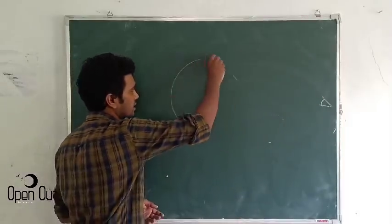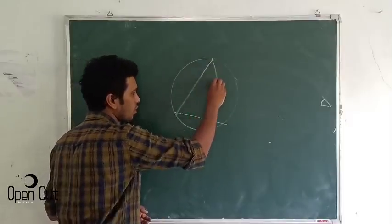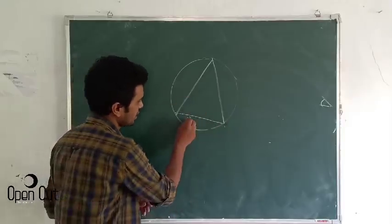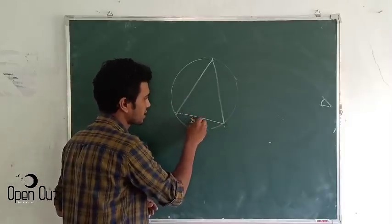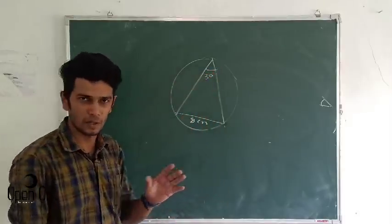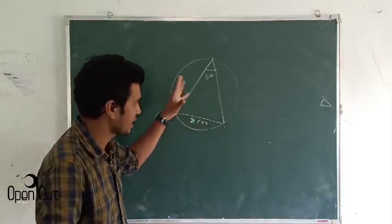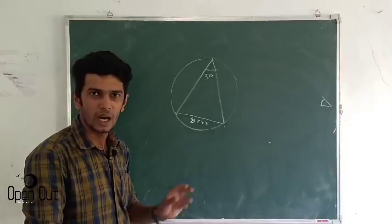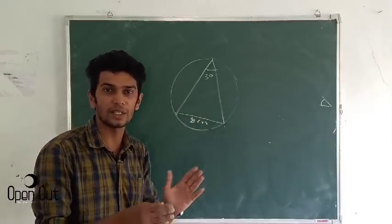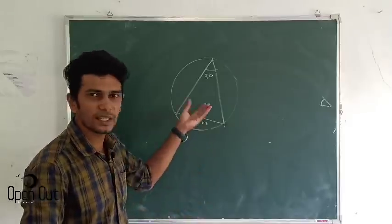A circle is in a triangle. If you look at this circle, you can see the radius of this circle. You can see the radius in this circle.